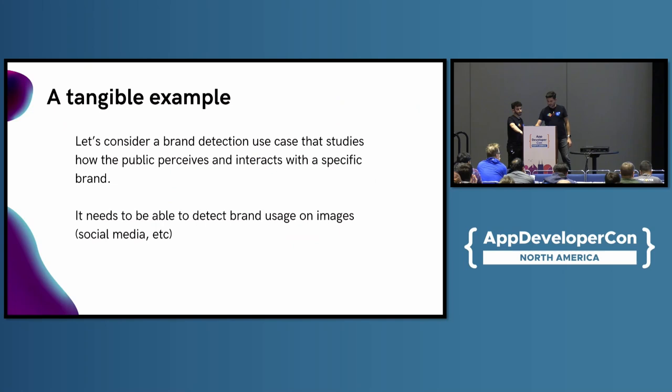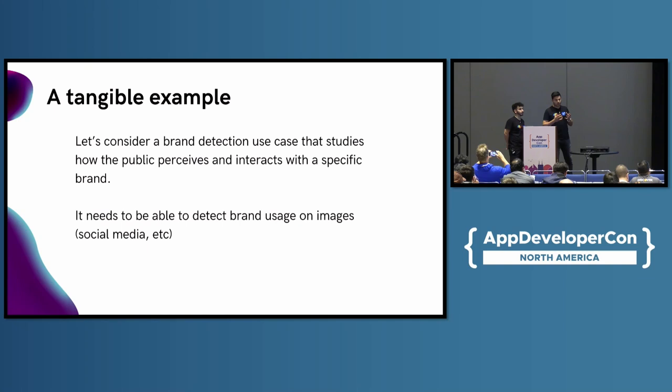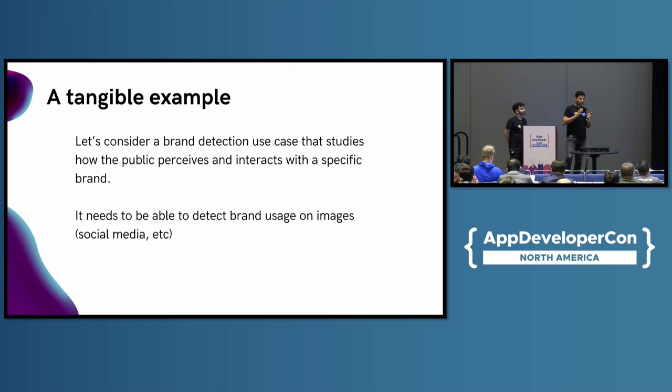For this talk, we actually want to talk about something tangible. So we're going to give you this example. Let's consider a brand detection use case where you would like to study your brand logo in images, in social media, for example. To do that, you need to have some kind of AI system to recognize this logo in the images. In this talk, we're not going to talk about the ingestion of the images — that's another topic — but more about the AI model serving part of things.